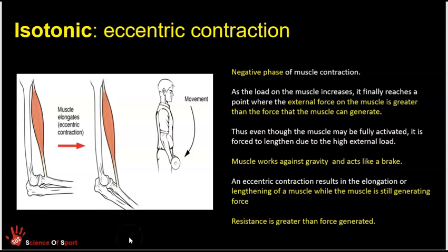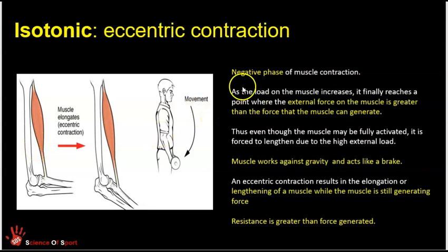In contrast, we've got eccentric contraction, which is also categorized as isotonic — same force applied but a change in length of the muscle. The muscle is contracting, but whilst contracting it is actually lengthening or elongating. Eccentric contraction involves elongation of the muscle, meaning lengthening during the contraction phase. In contrast to concentric, this is often the negative phase or downward phase of a movement.